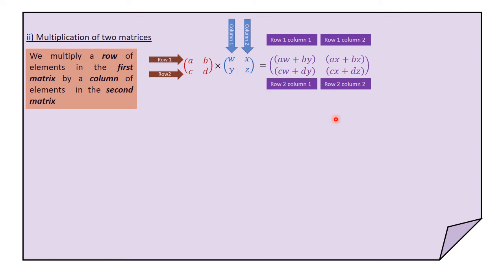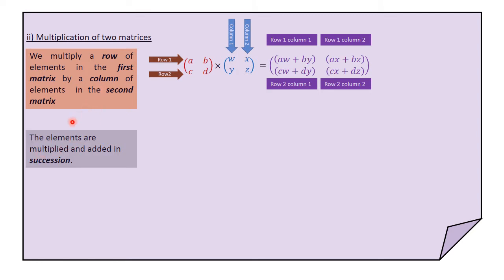Having said that, there's another point I need to make. We multiply a row of elements in the first matrix by a column of elements in the second matrix, and after multiplying we normally add the elements — they are multiplied and added in succession. To illustrate this, I'll use another example: a 2 by 3 matrix multiplied by a 3 by 3 matrix.